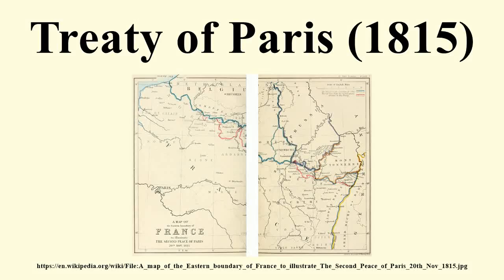The Treaty of Paris of 1815 was signed on 20 November 1815 following the defeat and second abdication of Napoleon Bonaparte. In February, Napoleon had escaped from his exile on Elba. He entered Paris on 20 March, beginning the Hundred Days of his restored rule. Four days after France's defeat in the Battle of Waterloo, Napoleon was persuaded to abdicate again, on 22 June.